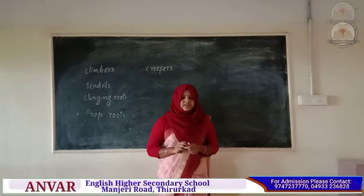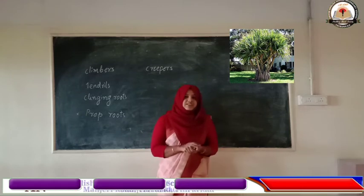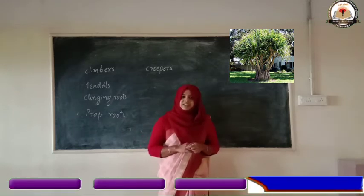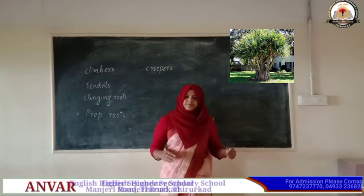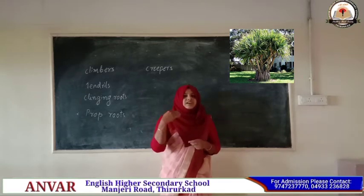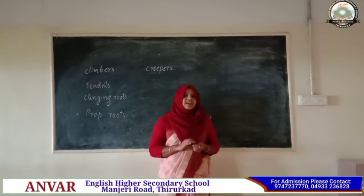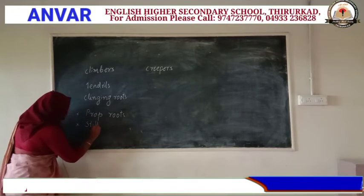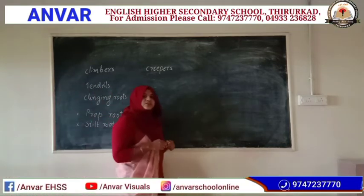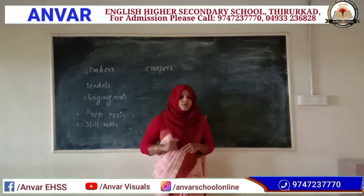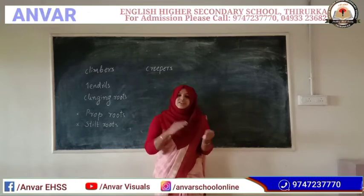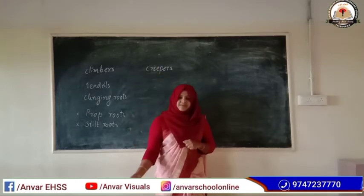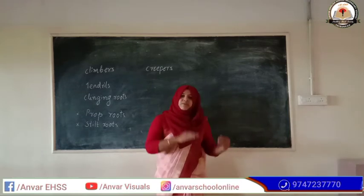In scrub pine tree we can see another type of roots that can also be observed from outside the soil. Here the roots are growing from the main stem. Such type of roots are called stilt roots. So we have two different types of roots observed above the soil: prop root and stilt root. Prop roots arise from branches, while stilt roots arise from the main stem of a plant.